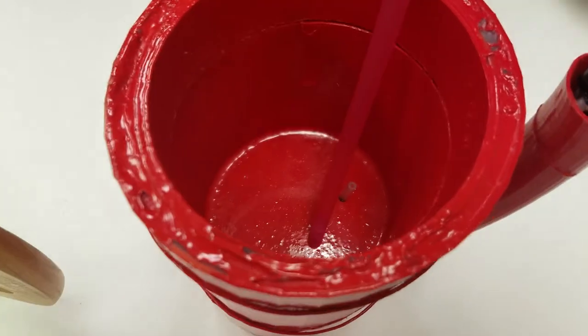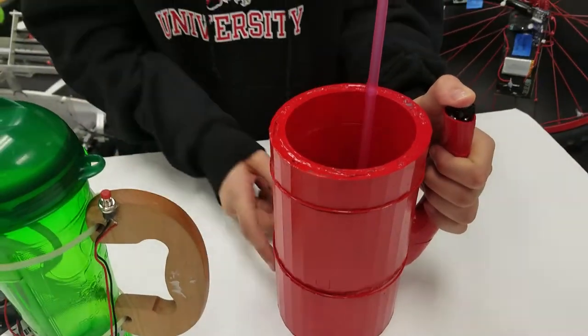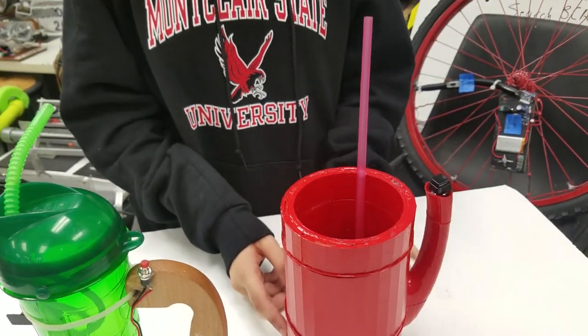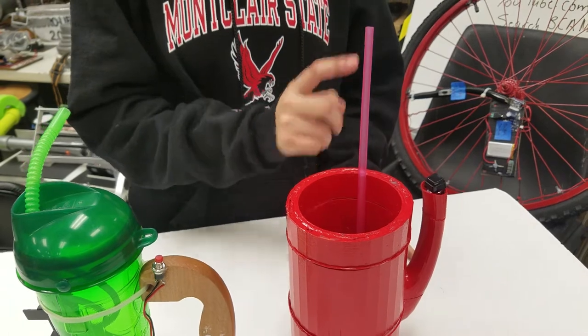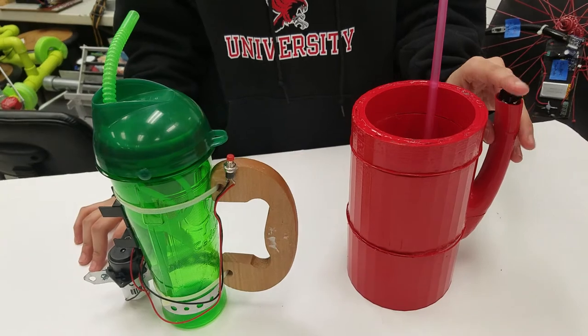So the nice thing about this is that all you have to do is press this button and there is a motor under here run by a 9 volt battery that sends liquid up into the straw. There is no effort required on the part of the user other than to press this button right here.